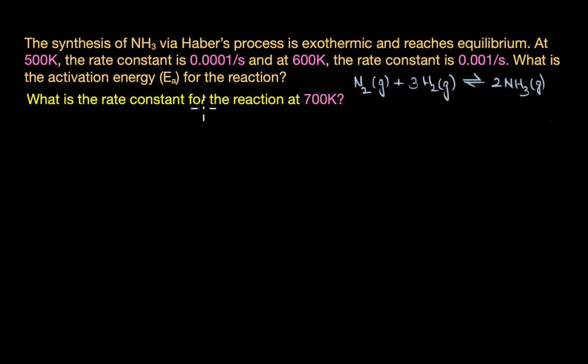To find out the rate constant, we once again have to use the Arrhenius equation: ln K2 by K1 equals Ea by R into 1 by T1 minus 1 by T2.